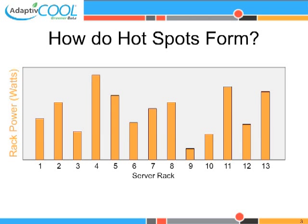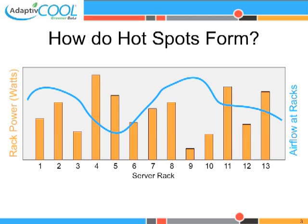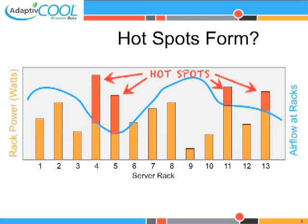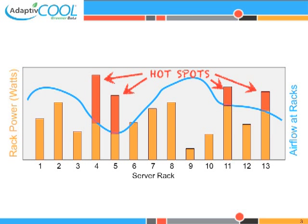Let us plot heat generated by server racks and cold air discharge from the floor grates. In most of the regions in the data center, there is more than enough cold air to cool the servers. Usually, there are a few locations that are under-cooled, forming hotspots.